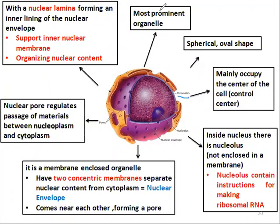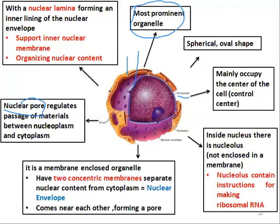The nucleus is the most prominent organelle in the cell, and in general the most dense organelle in the cell, because it contains DNA. The nuclear envelope contains pores, and those pores regulate the passage of material between the nucleoplasm and the cytoplasm. These pores control the passage of material from the nucleoplasm to the cytoplasm and from the cytoplasm to the nucleoplasm.